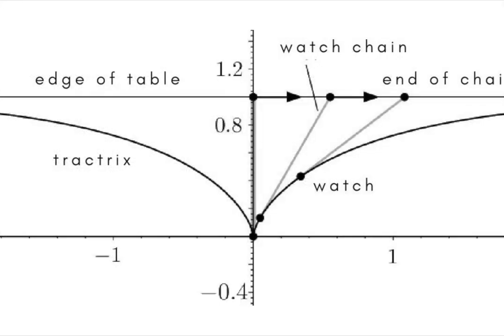In 1676, at about the time Leibniz was doing groundbreaking work on calculus, Perrault placed his pocket watch in the middle of a table, pulled the end of its chain along the edge, and asked: what is the shape of the curve traced by the watch?